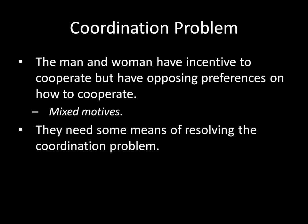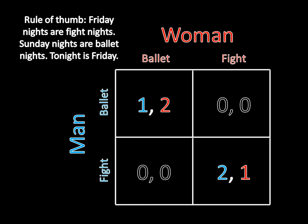To summarize: this is a coordination problem. The man and woman have incentives to cooperate but have opposing preferences on how to cooperate — a game of mixed motives. You need some means of resolving the coordination problem so you don't end up in the bad outcomes. If they had an agreement at 7 a.m. to meet at the ballet or fight at 7 p.m., they'd stick to it. Or if there's a rule of thumb — Friday nights are fight nights, Sunday nights are ballet nights — that coordination mechanism lets both parties know where to meet without direct communication.